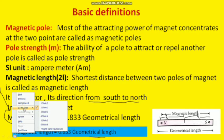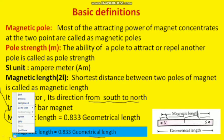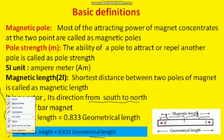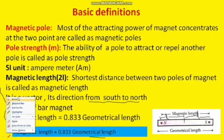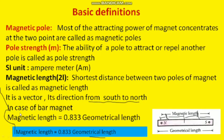The relation between magnetic length and geometrical length: magnetic length equals 0.833 times the geometrical length. For example, if the geometrical length of a magnet is 1 centimeter, then the magnetic length is 0.833 centimeters.